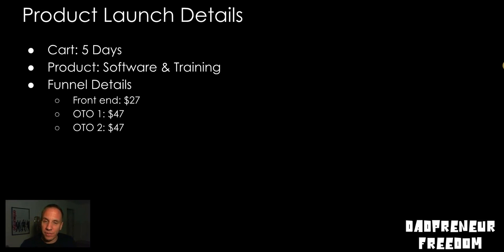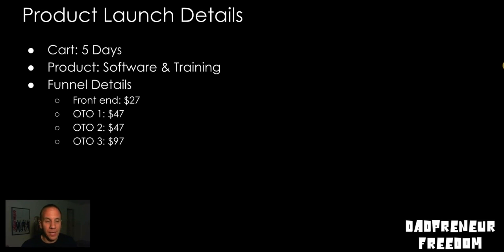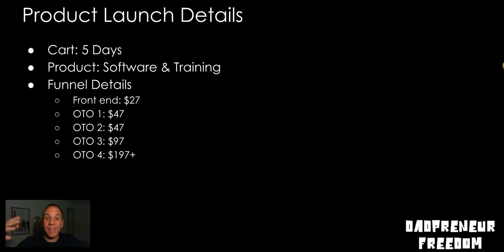OTO number two was $47 as well — done-for-you follow-up sequences, like 30 sequences of email, text, and ringless voicemail, pre-written so they could just plug and play. OTO number three was $97: 20 additional licenses to the front end product. OTO number four was the white label version — they could white label the software, get their own software and shopping cart. It started at $197 and went up $5 per sale to add scarcity and urgency.